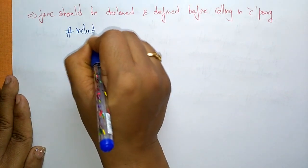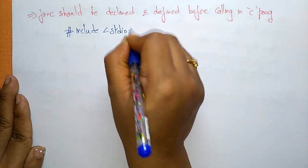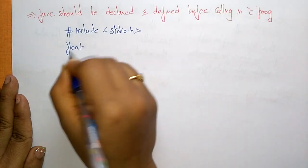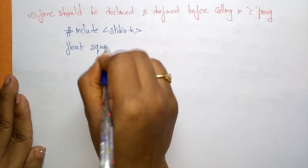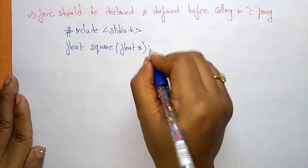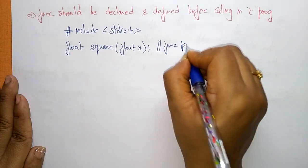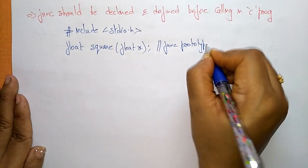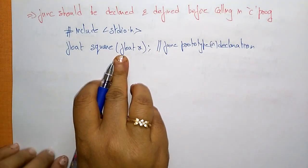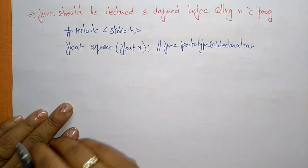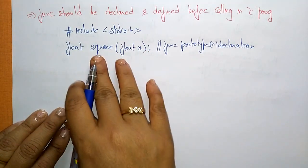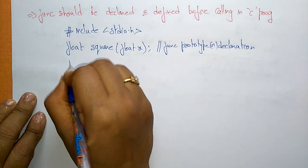Let me write the program. Hash include stdio.h. Now I am declaring the function: the return value is of data type float, 'square' is the function name, and the argument list contains one float argument x. This represents the function prototype, also called the function declaration. So first I have declared the function — I have not yet defined it, only declared it.